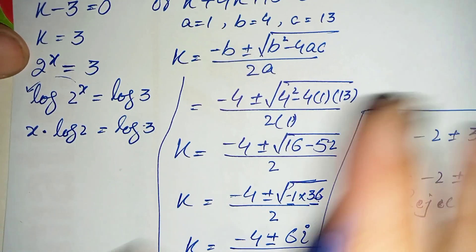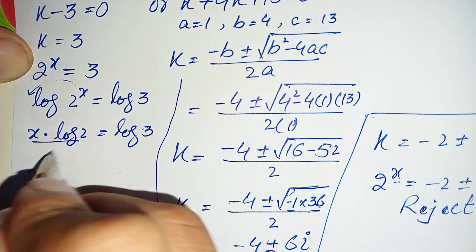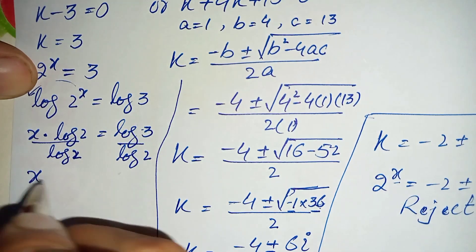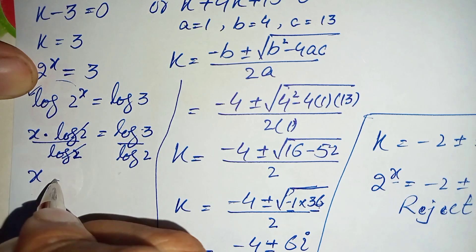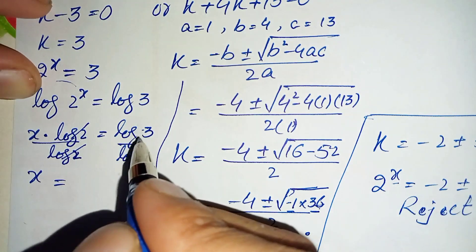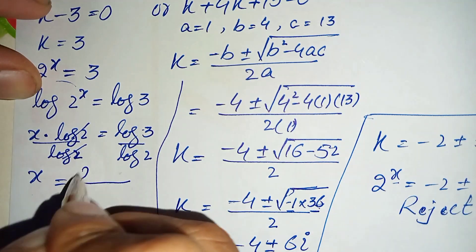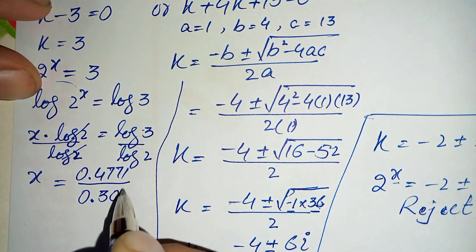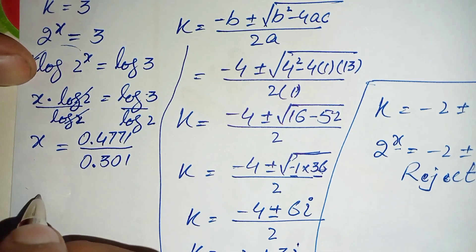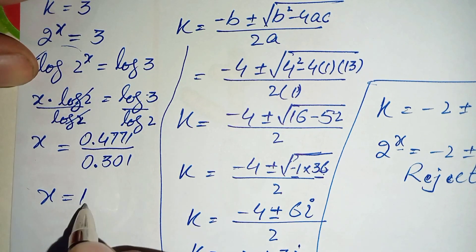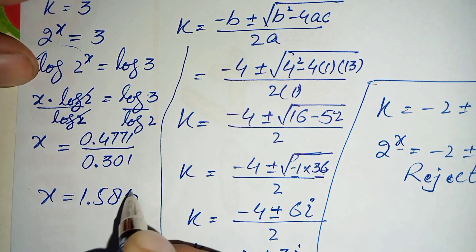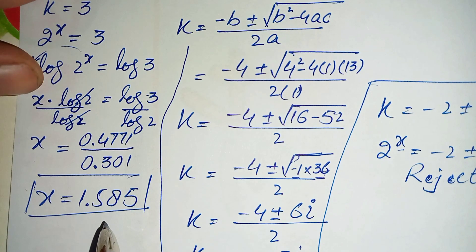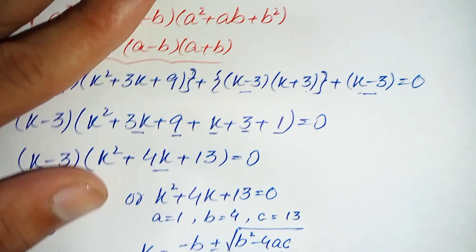Dividing both sides by log 2, the log 2 terms cancel, leaving x equals log 3 divided by log 2. Substituting the values — log 3 is 0.4771 and log 2 is 0.301 — and dividing these two decimal numbers, we get the final value of x equal to 1.585 (to 3 decimal places). So x equals 1.585 is our answer for this exponential equation.